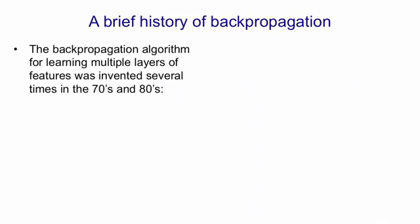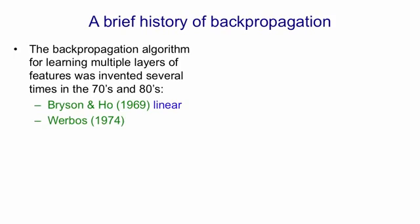Backpropagation was invented independently several times in the 70s and 80s. It started in the late 60s with control theorists Bryson and Ho, who invented a linear version of backpropagation. Paul Werbos went to their lectures and realised it could be made non-linear, and in his thesis in 1974, he published what's probably the first proper version of backpropagation. Rumelhart, Williams, and I invented it in 1981 without knowing about Paul Werbos' work, but we tried it out and it didn't work very well for the first thing we tried it for, so we abandoned it.